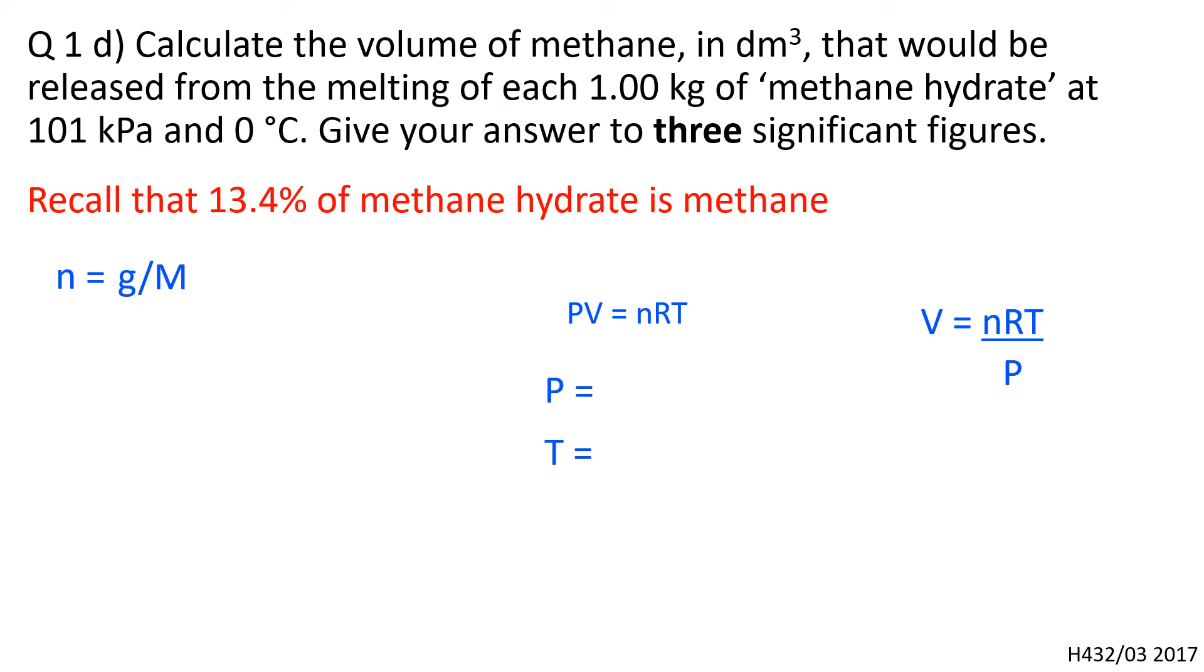101 kilopascals is 101 times 10³ pascals, and zero degrees Celsius is 273 Kelvin. A thousand divided by 16 times by 0.134, because only 13.4 percent of that 1000 grams is methane - that's 8.375 moles. Put the digits into the equation and you get 0.188 meters cubed.